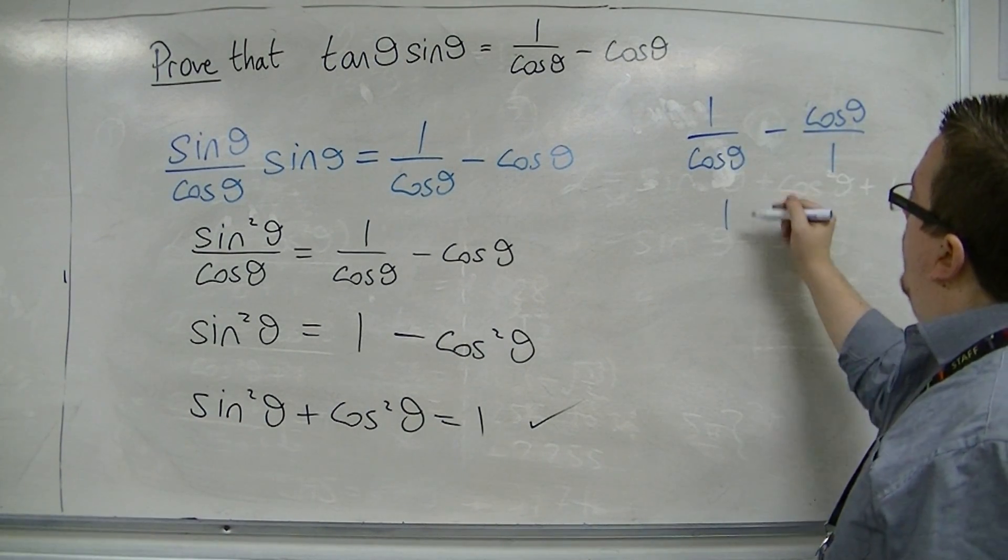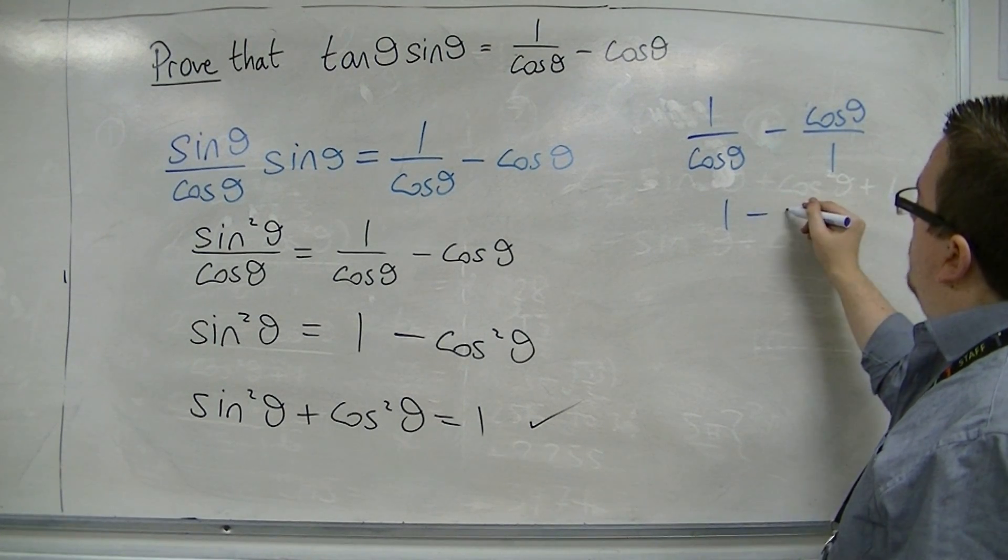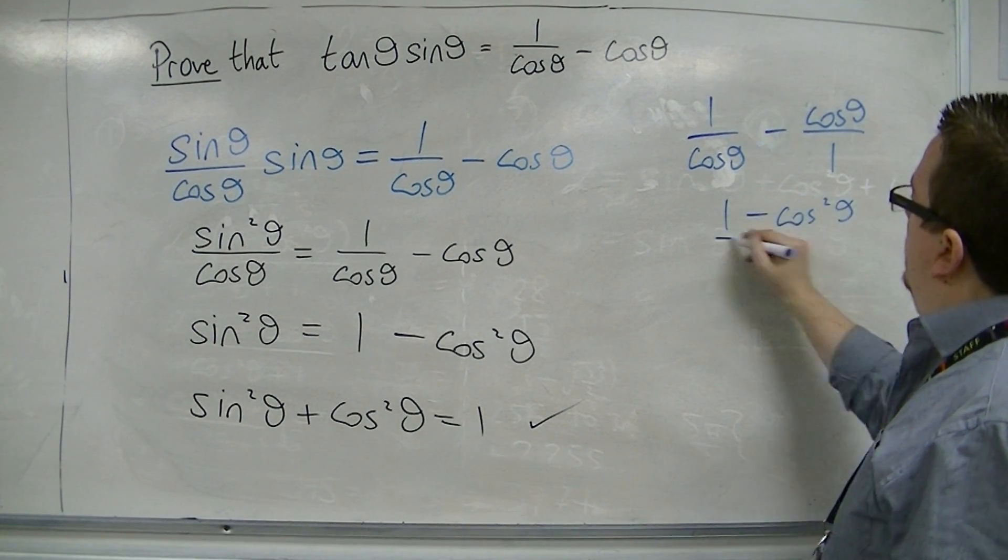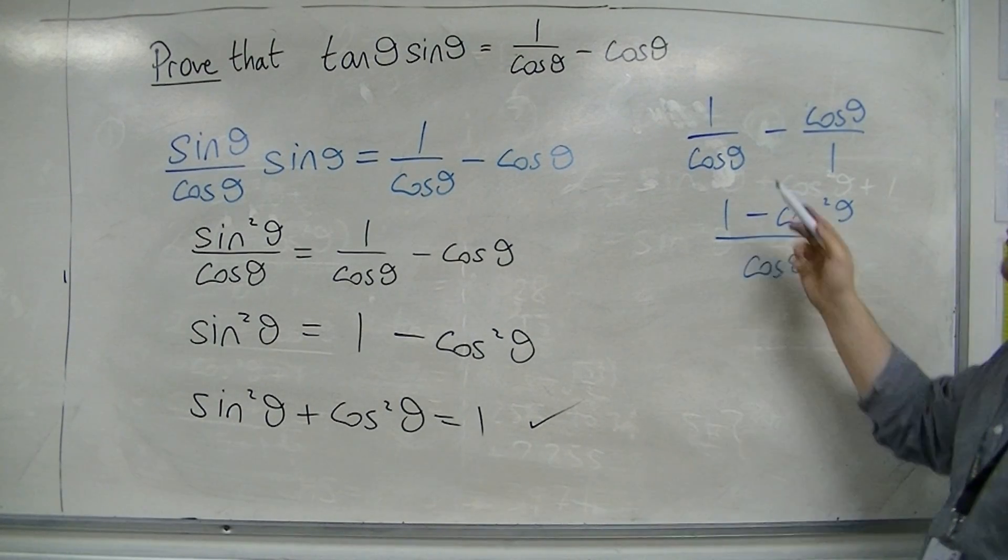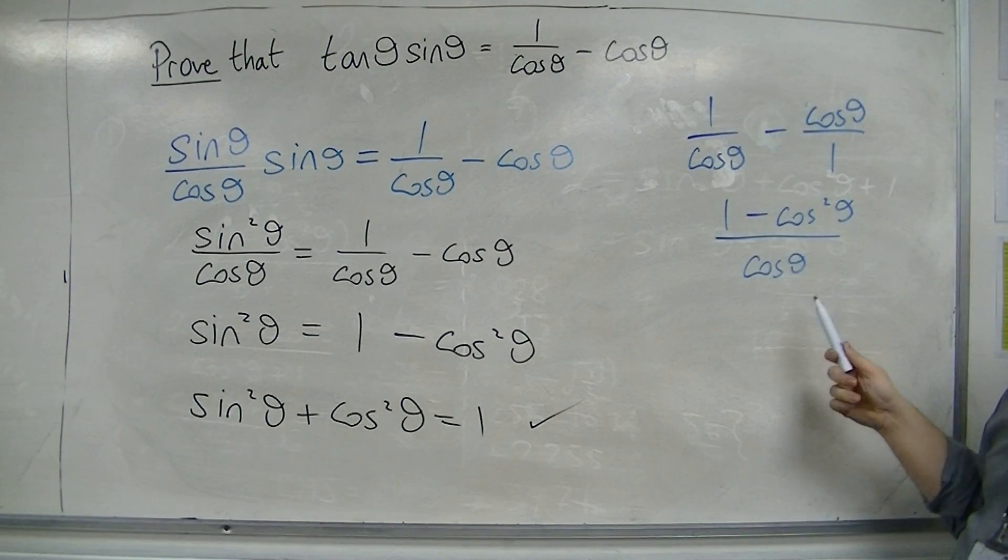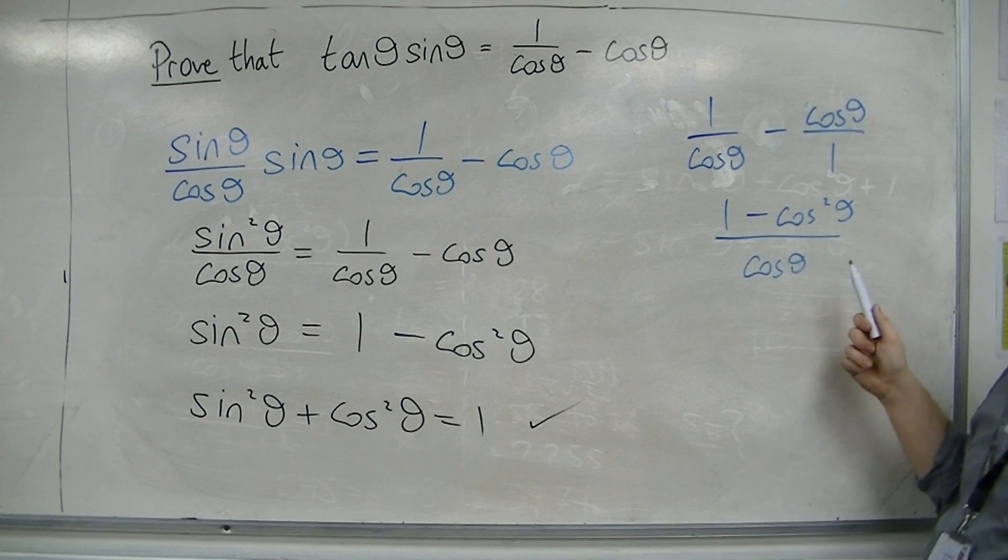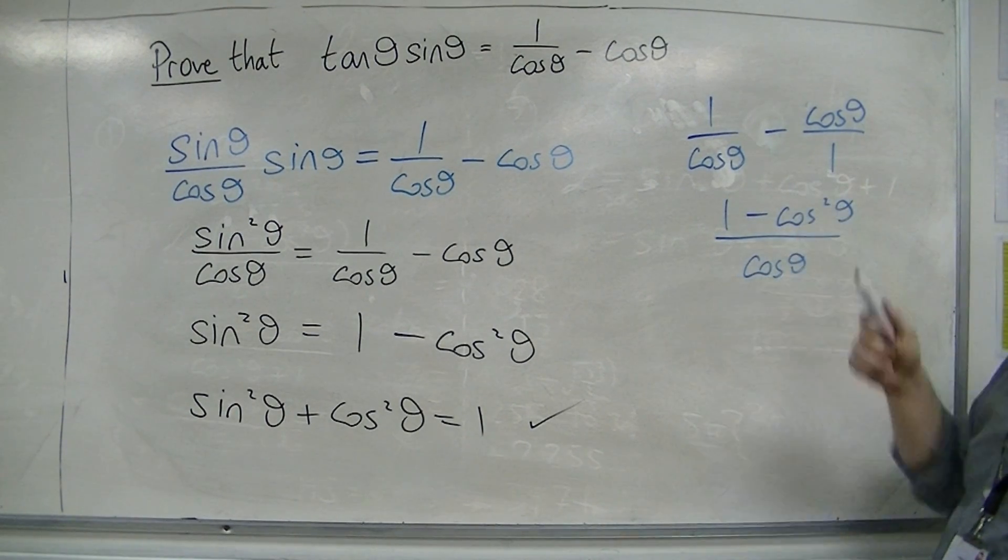So 1 times 1 is 1, cos theta times cos theta is minus cos squared theta, and then you've got cos theta over 1. So start with writing the right-hand side as that, and then see if you can get to tan theta sin theta.